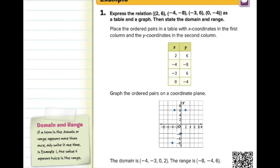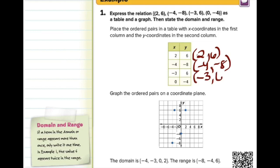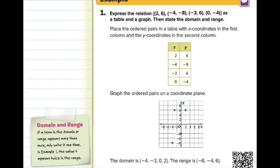On the graph, (2,6) is plotted — I'll label that A. For point B, (−4,−8): start at the origin, go backwards to −4 and down to −8. Note that on this graph, intervals are by 2s, so you count back two tick marks for −4. Pay close attention to how intervals are set up — sometimes by 1, sometimes by 2, sometimes by 10. Point C is (−3,6): go to negative 3, which is between −4 and −2, up to 6. Point D is (0,−4): don't go left or right, just down to −4.